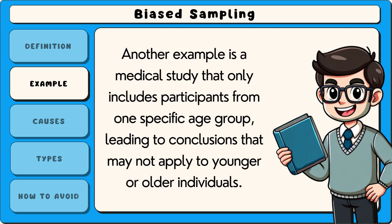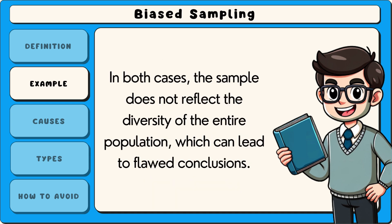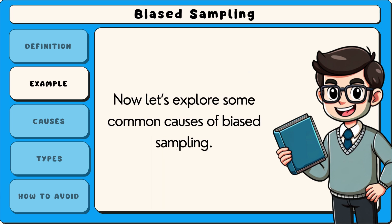Another example is a medical study that only includes participants from one specific age group, leading to conclusions that may not apply to younger or older individuals. In both cases, the sample does not reflect the diversity of the entire population, which can lead to flawed conclusions.